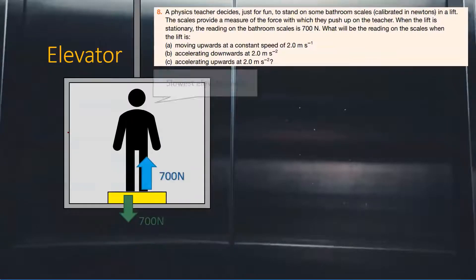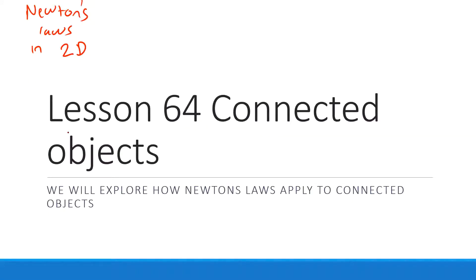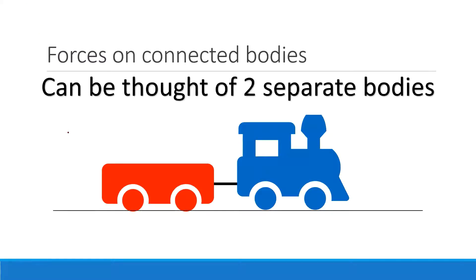This next lesson is about connected objects — objects that are connected via something. In this case, this train is connected to its carriage via a wire or cable. You can have the same situation occur if you've got something vertically being hung. The main idea is that forces on connected bodies can be thought of as acting on two separate bodies.